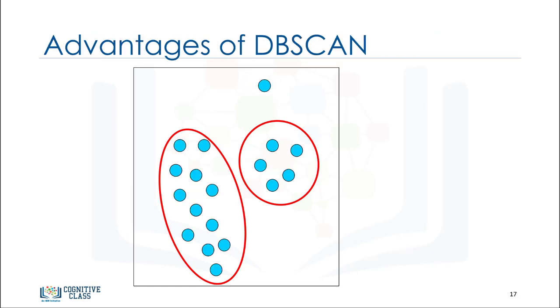Let's review this one more time to see why DBSCAN is cool. DBSCAN can find arbitrarily shaped clusters. It can even find a cluster completely surrounded by a different cluster. DBSCAN has a notion of noise and is robust to outliers.